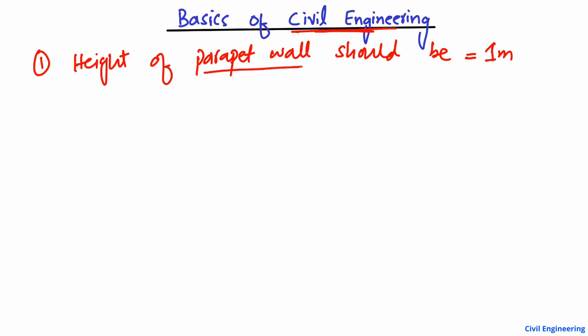The second point is that the thickness of DPC layer should always be 2.5 centimeter at least, or we can say one inch. This is the thickness of the DPC.